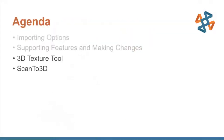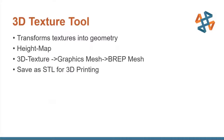Now that we've seen how to import and work with meshes, let's look at a feature that creates meshes from pictures — it's called 3D Texture. 3D Texture converts black and white images into a mesh or polygons. Another term for this is a height map, where black is low and white is higher. That 3D Texture can create a graphics mesh that can then be used to create a BREP mesh for modifications or cuts. The graphics mesh can also be saved directly to STL if you want to create a 3D print.